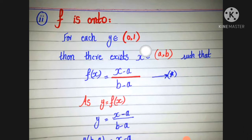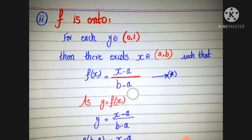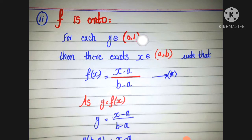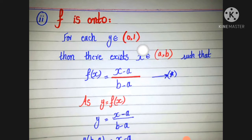f is onto. For each y belonging to the open interval (0,1), there exists x belonging to the open interval (a, b) such that f(x) = (x - a)/(b - a). This is equation star. For each y in the open interval (0,1), there exists x in the open interval (a, b) such that f(x) = y.